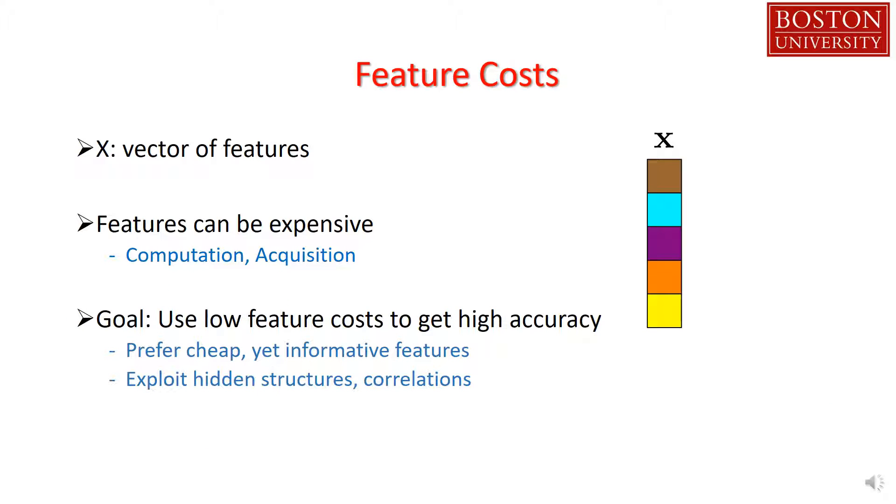So what is prediction on a budget? Here we have a feature vector. Each feature in the vector is associated with an acquisition cost. The goal is to come up with a decision rule that, based on the features one has seen about an example, determines what is the next feature to acquire or whether one can stop and classify the example. Intuitively, the rule would adaptively select cheap yet informative features and exploit hidden relations among the features.